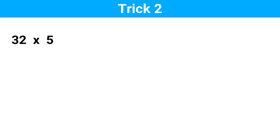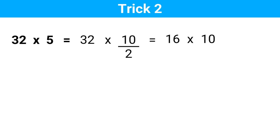Suppose you have to multiply a number by 5. For example, 32 times 5. Another way to write this same thing is 32 times 10 divided by 2, because 10 divided by 2 is also 5. Now 32 divided by 2 is 16 — we have converted our problem into a simple one. 16 times 10 is 160. This is the answer. If we multiply any number by 10, all we have to do is move the decimal point one place to the right.